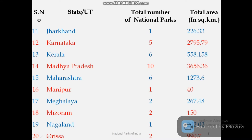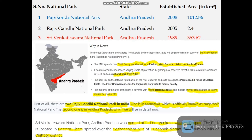From this data, one key takeaway is that Madhya Pradesh has the most national parks — ten. This is an important fact for competitive exams. The question 'Which state has the most national parks?' — the answer is Madhya Pradesh with ten.